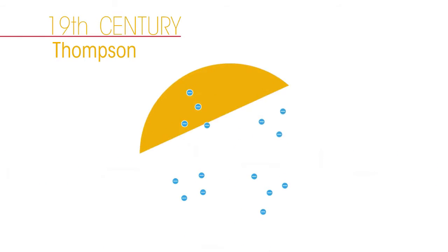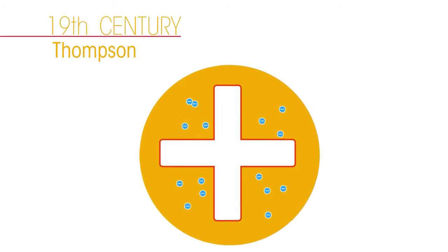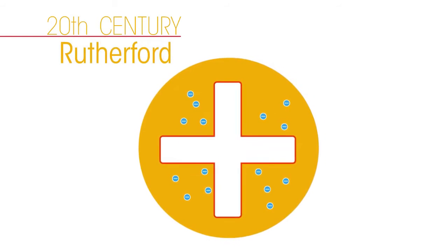His discovery showed that atoms are made up of even smaller particles. He proposed the plum pudding model of the atom, whereby the atom is a positively charged sphere within which electrons swim. In the early 20th century, experiments designed by a man called Rutherford indicated that the plum pudding model was not entirely correct.